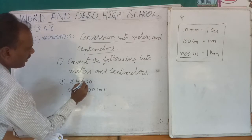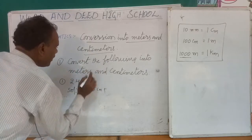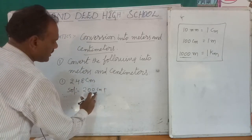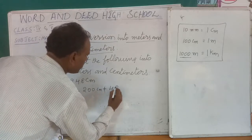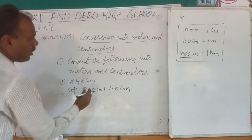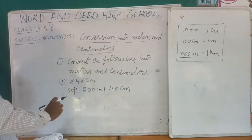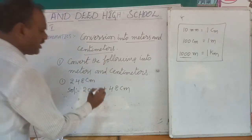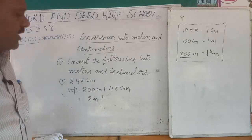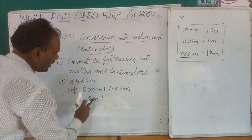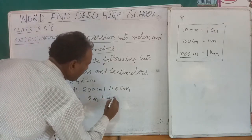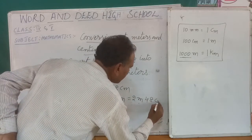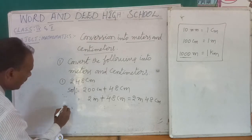So: 248 centimeters = 200 centimeters + 48 centimeters. 200 centimeters equals 2 meters, so the answer is 2 meters 48 centimeters.